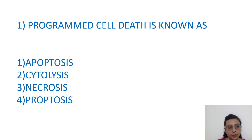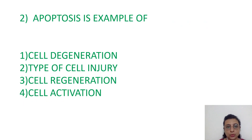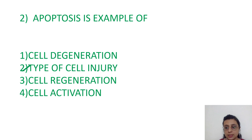Programmed cell death — remember, that is apoptosis. Apoptosis is a type of cell injury, a type of cell death, which is programmed and planned.